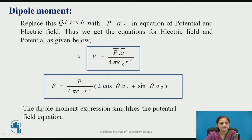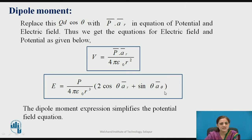Replacing Qd cos theta with P-bar dot a-bar_R in the equations for potential and electric field, the electric potential due to the dipole moment becomes V equals P-bar dot a-bar_R upon 4 pi epsilon naught R squared. The electric field equation becomes E equals P upon 4 pi epsilon naught R cubed times (2 cos theta a-bar_R plus sin theta a-bar_theta). The dipole moment expression simplifies the potential and field equations.